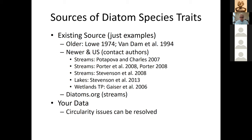Traits are also available on diatoms.org. When traits are published, journals often can't handle the full databases, so look for contact-the-author notes — most authors would be willing to share that information. It's also a good idea to use your own data. You may get pushback due to circularity concerns, but those can be resolved. Using your own data to develop traits may not be as robust as using years of data from multiple regions, but it is not completely circular or tautological.